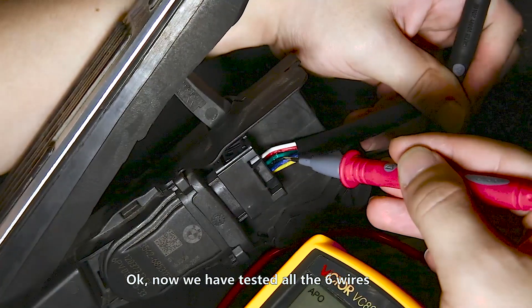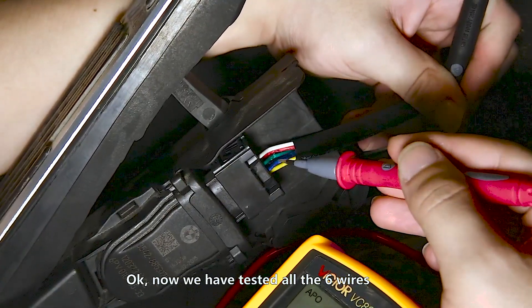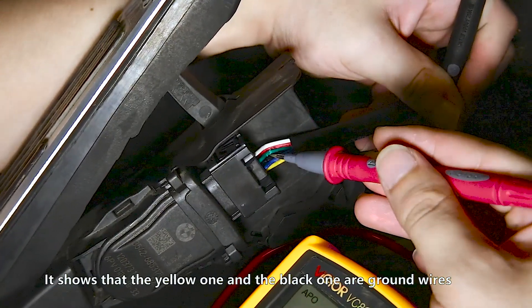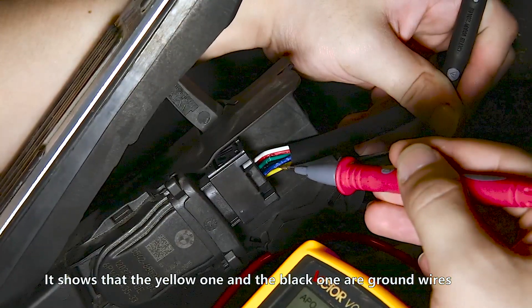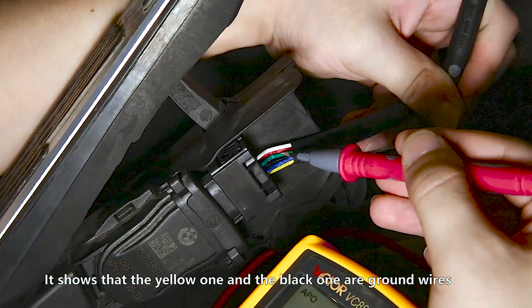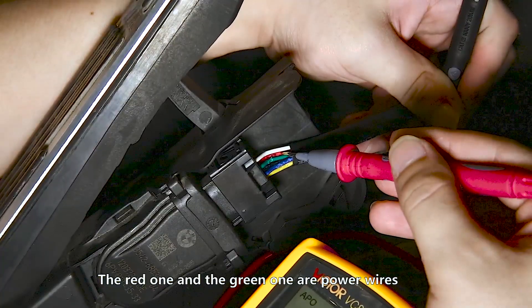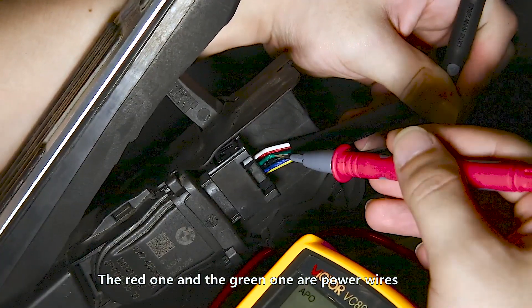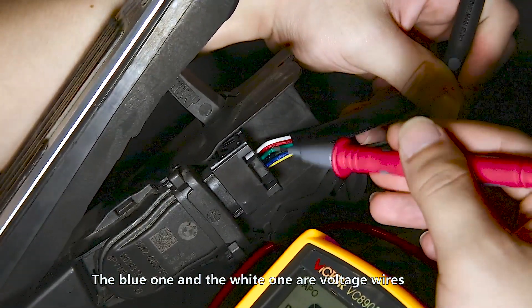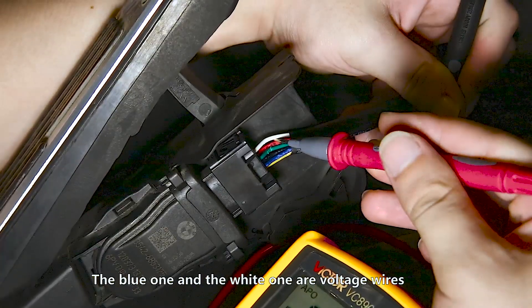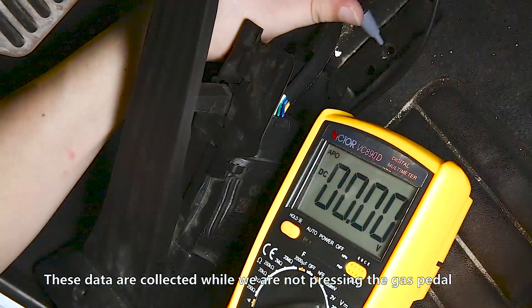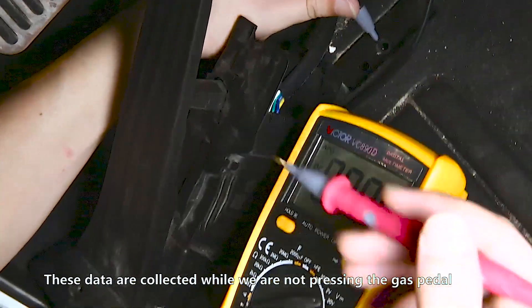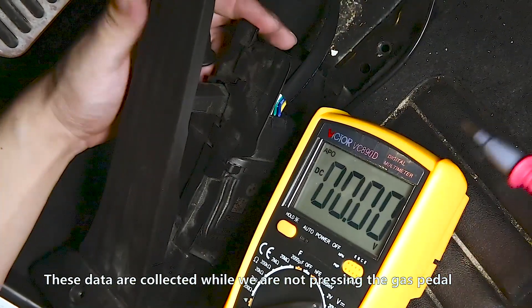Now we have tested all the wires. It shows that the yellow one and the black one are ground wires. The red one and the green one are power wires. The blue one and the white one are voltage wires. These data are collected while we are not pressing the gas pedal.